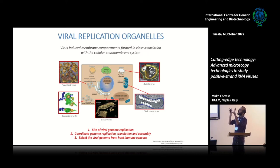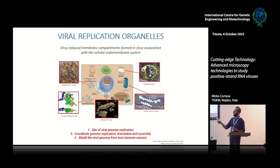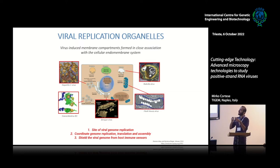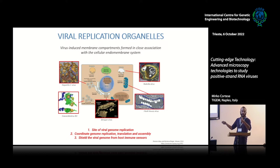Each virus has its own favorite organelle where to install the replication organelle. The main functions are, first, they are the site for viral genome replication. Additionally, they are an enclosed, separate space used to coordinate all steps of the viral replication cycle — coordinating genome replication, genome translation, and genome assembly by compartmentalizing these different steps.